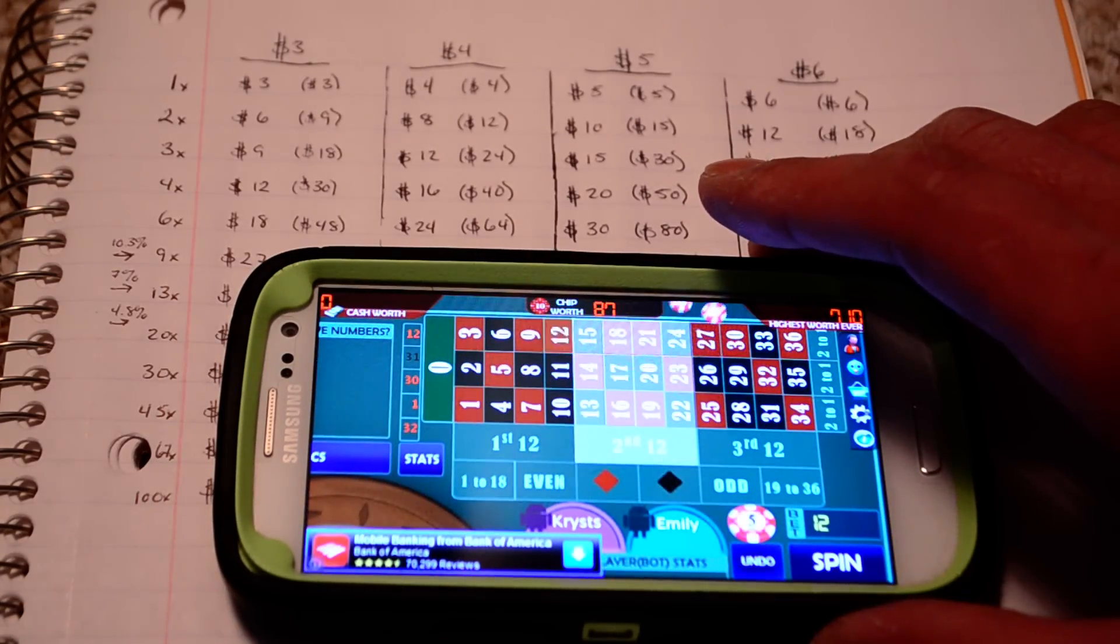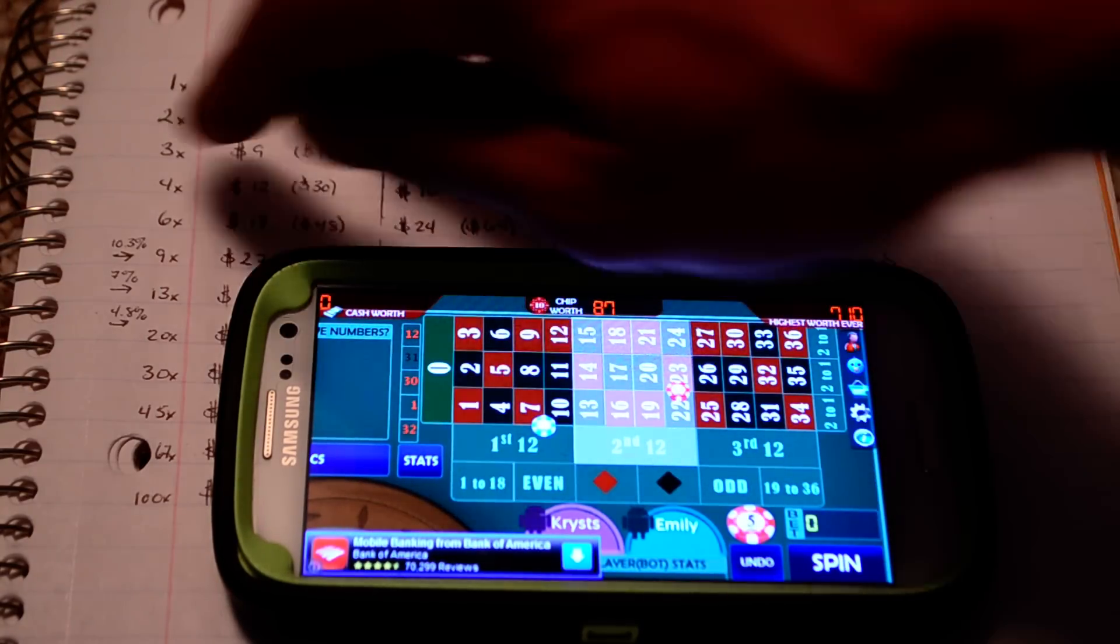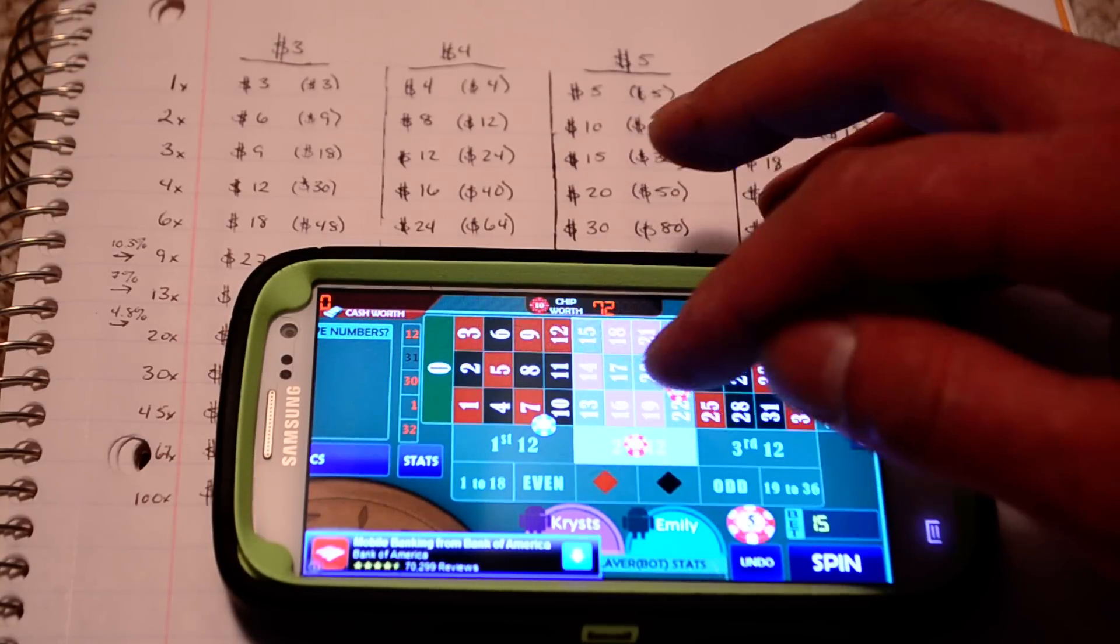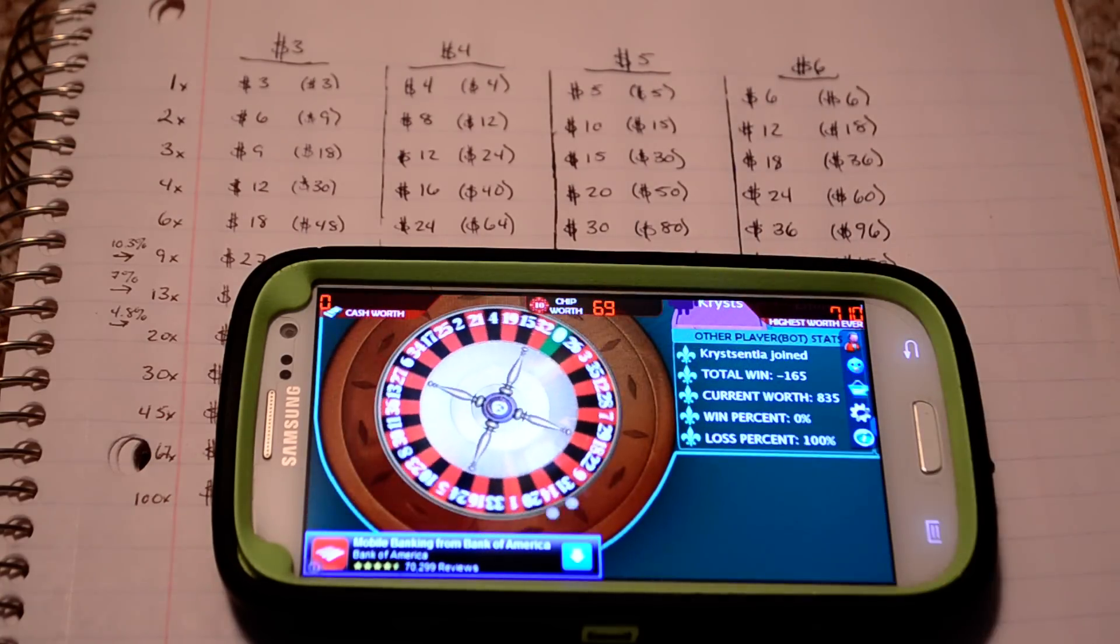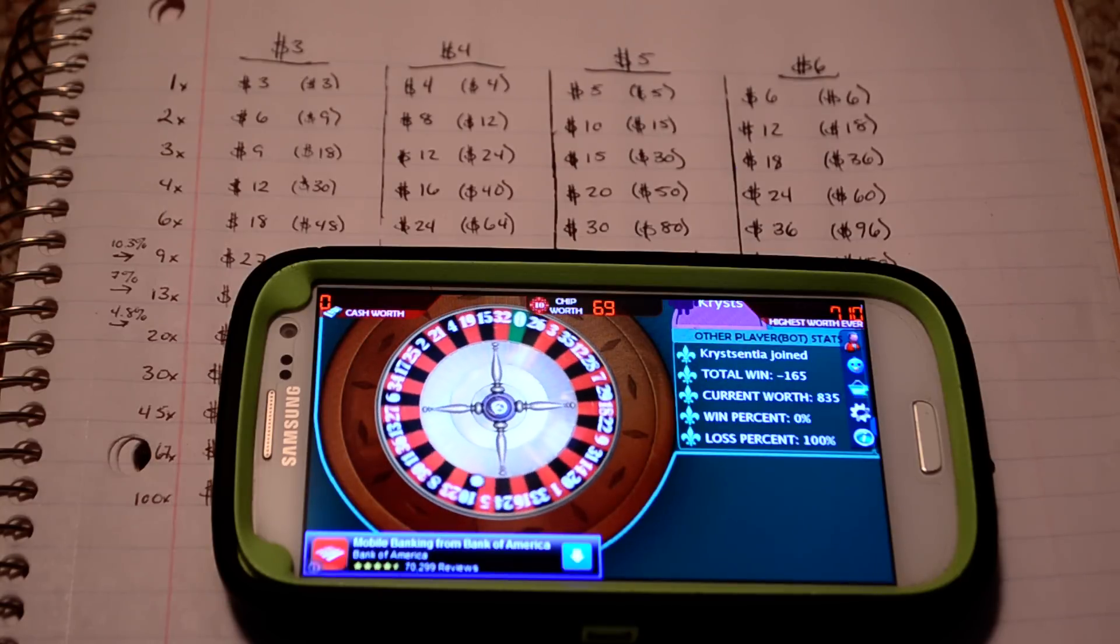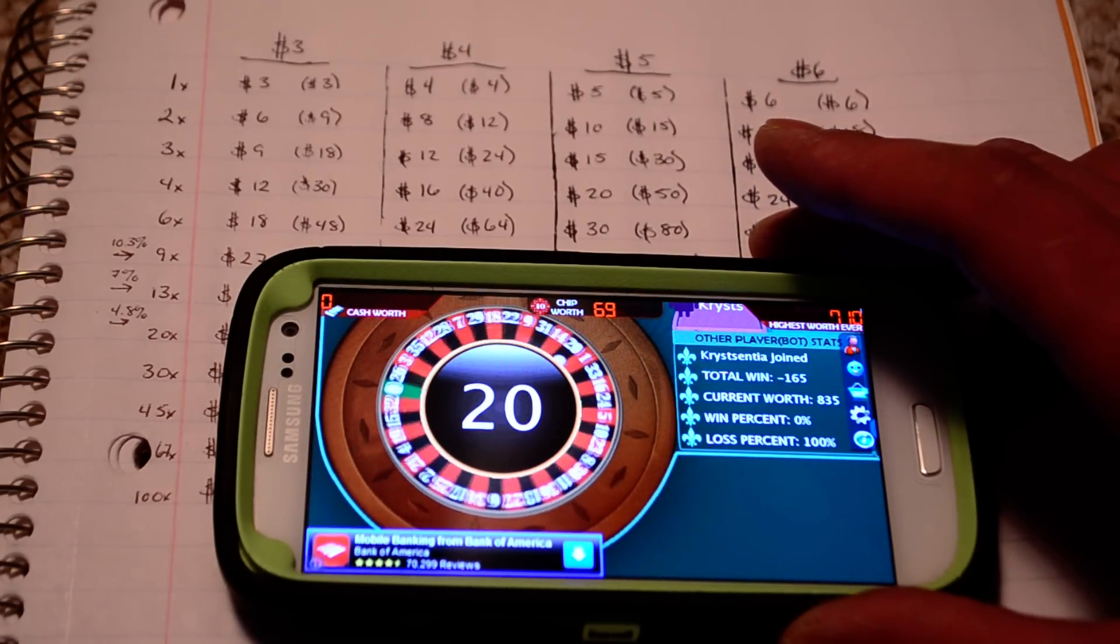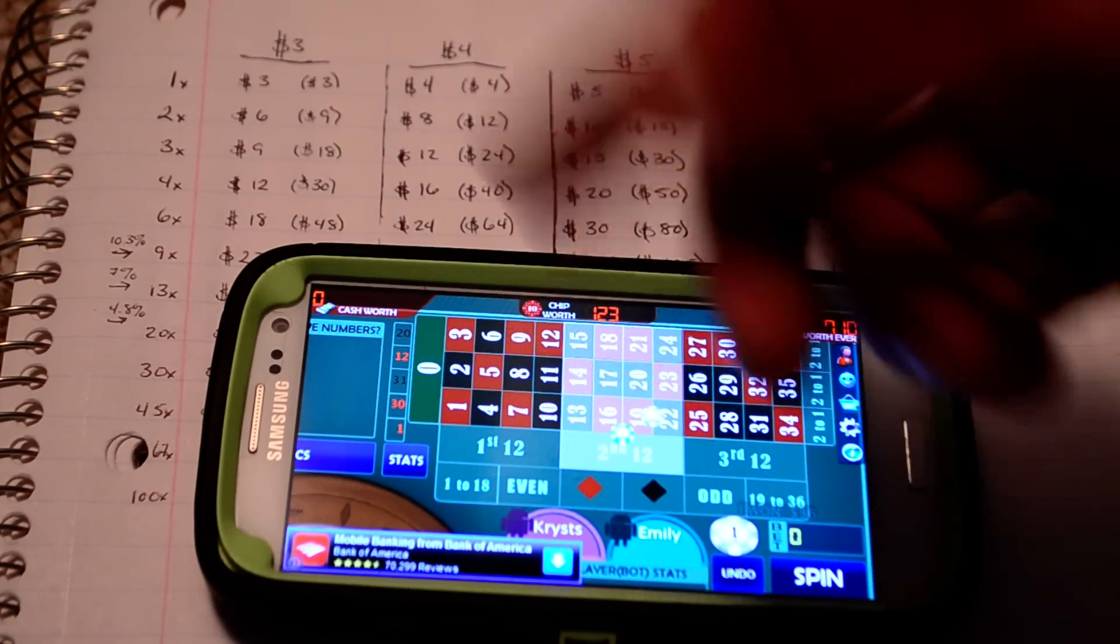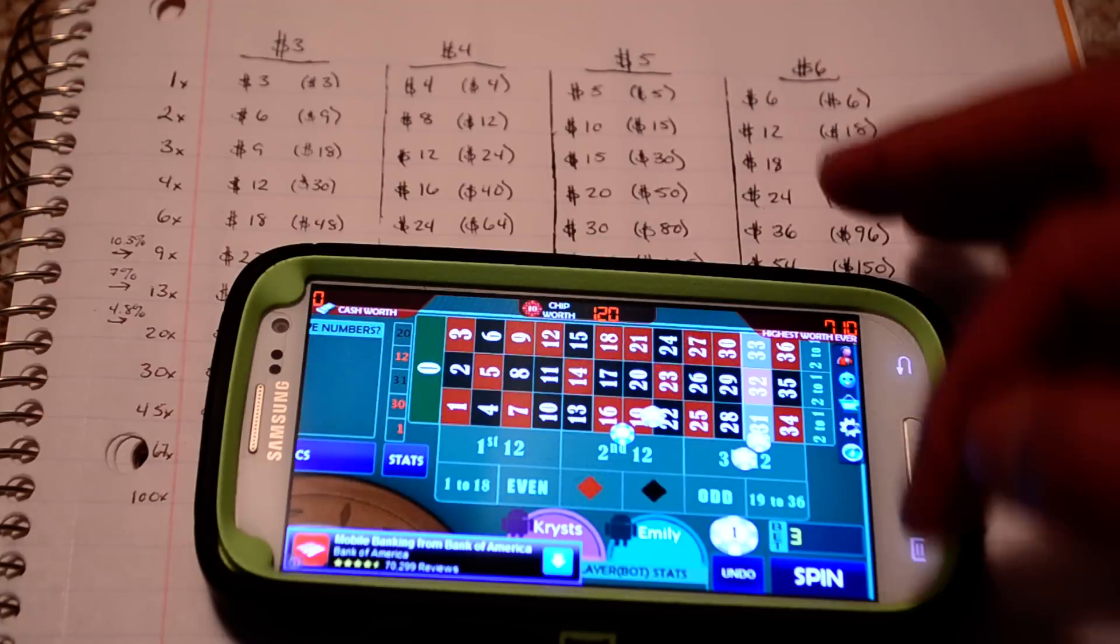And now I am up to, oh wait, no, no, no, I didn't win. I'm an idiot. Okay, so I didn't win, so now I have to do six times my bet, so now I have to do eighteen. I don't know what I was thinking there. So now eighteen times my bet. Eighteen dollars, six times my bet. And now I got it. So now I'm up to 123. And now, because I won, I don't have to follow that sequence. Now, now I just go back to betting three.